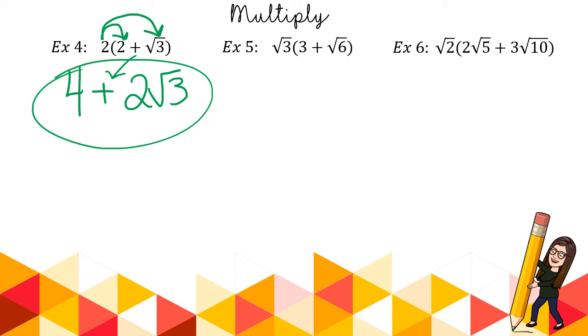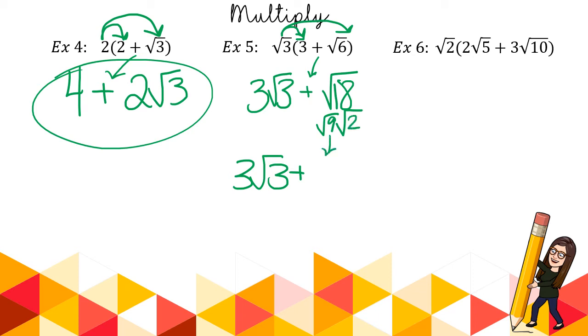The next one: radical 3 times 3. Well I can't actually multiply them, and I should write the integer out front of the radicand, just to make it clearer. Then I need radical 3 times radical 6. They have the same index. I'm gonna multiply the numbers underneath to get radical 18. Lastly, simplify. 18 breaks down - 3 does not, so I'm just gonna bring down the 3. 18 breaks down into 9 and 2. Square root of 9 is 3, square root of 2 is 2.